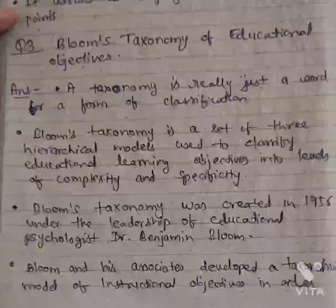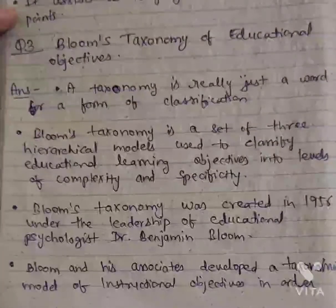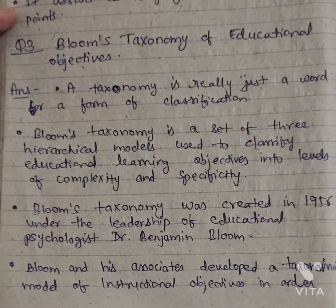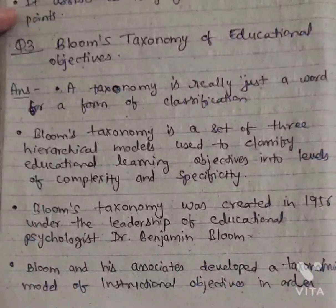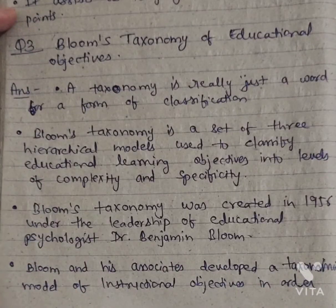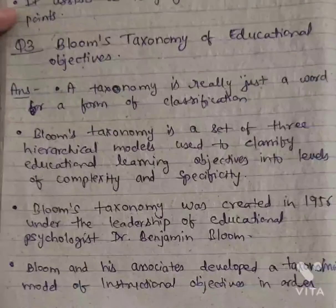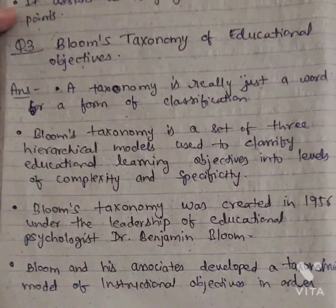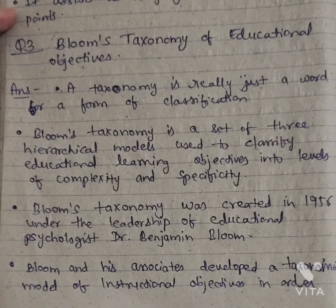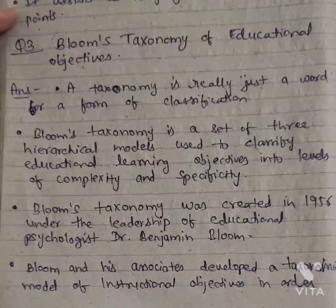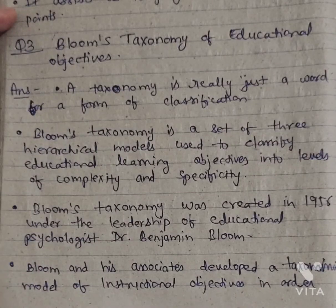Bloom's Taxonomy of Educational Objectives. A taxonomy is really just a word for a form of classification. Bloom's Taxonomy is a set of three hierarchical models used to classify educational learning objectives into levels of complexity and specificity.